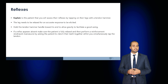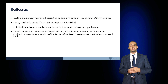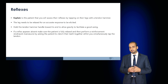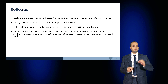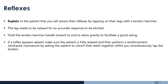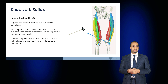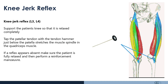Move on to examine the reflexes. Explain to the patient that you will tap on their legs in various positions with a tendon hammer, and that the leg needs to be relaxed for an accurate response. Hold the tendon hammer towards the end to allow gravity to facilitate a good swing. If a reflex appears absent, ensure the patient is fully relaxed and perform the Jendrassik maneuver — ask the patient to clench their teeth while you simultaneously tap the tendon. The knee jerk reflex, mediated through L3 and L4: support the knee so it is completely relaxed and tap the patellar tendon just below the patella, stretching the muscle spindle in the quadriceps.